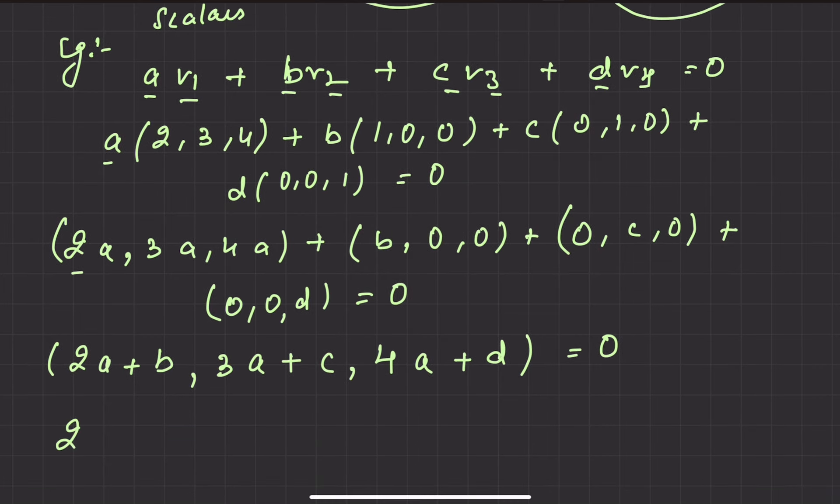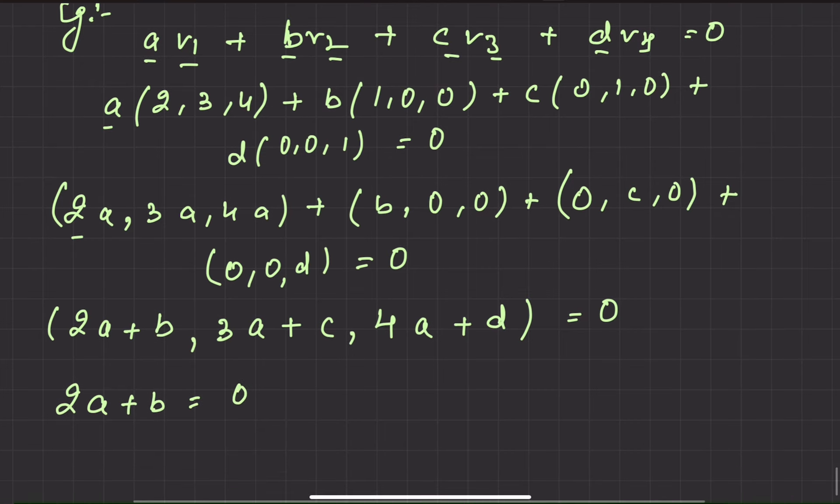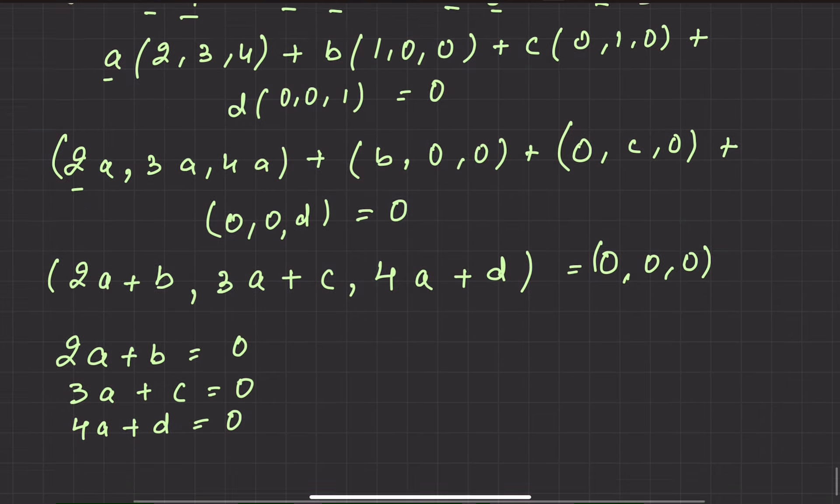See, I can write 2a plus b equal to 0, 3a plus c equal to 0, and the last is 4a plus d equal to 0.